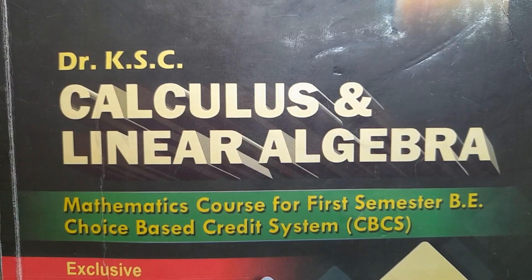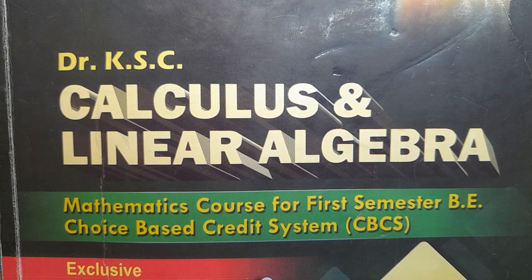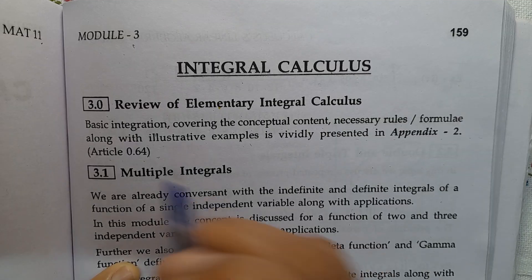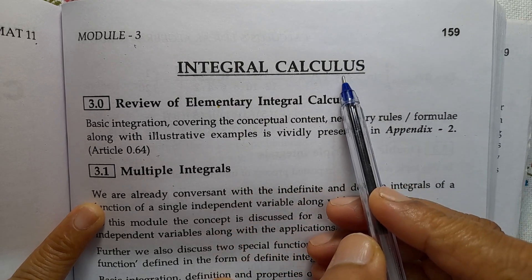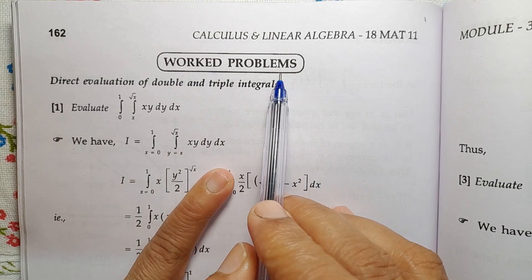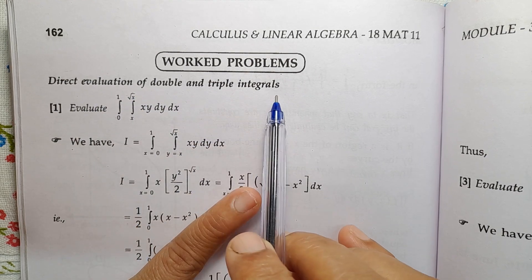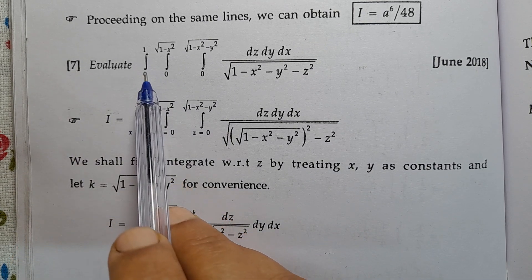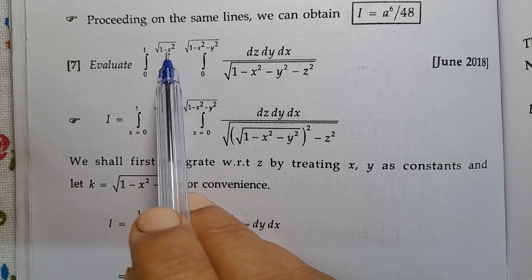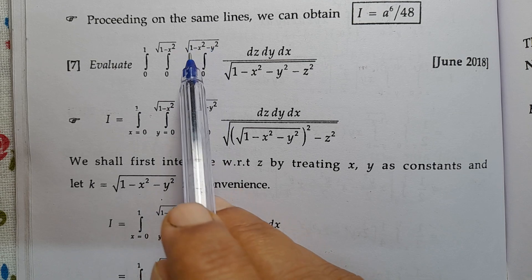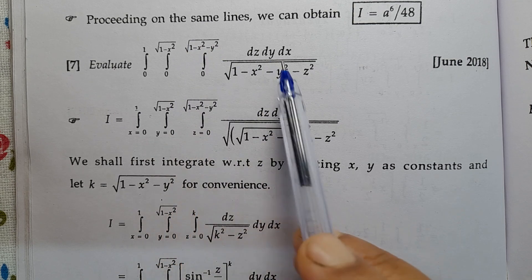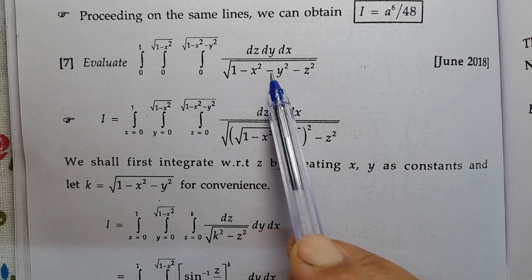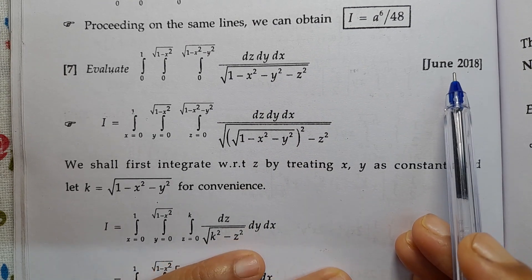Subject: Engineering Mathematics for First Semester BE. Module 3: Integral Calculus, Worked Problems — Direct Evaluation of Double and Triple Integrals. Problem No. 7: Evaluate the integral from 0 to 1, integral from 0 to √(1−x²), integral from 0 to √(1−x²−y²) of dz dy dx, all divided by √(1−x²−y²−z²). (Question Paper: June 2018)